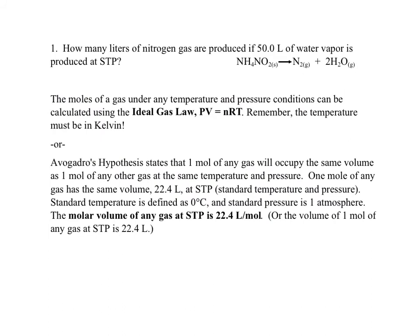So let's look at this problem. We want to know how many liters of nitrogen gas are produced if 50 liters of water vapor is produced at STP. Notice how these are both gases, and now we're talking about a volume — liters are a unit for volume. We also have something called STP mentioned in this problem. So how do we go about solving this?